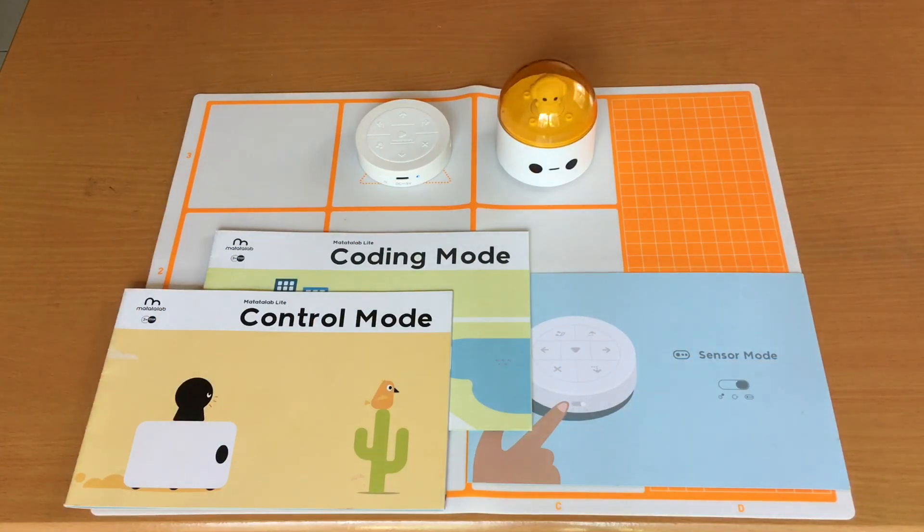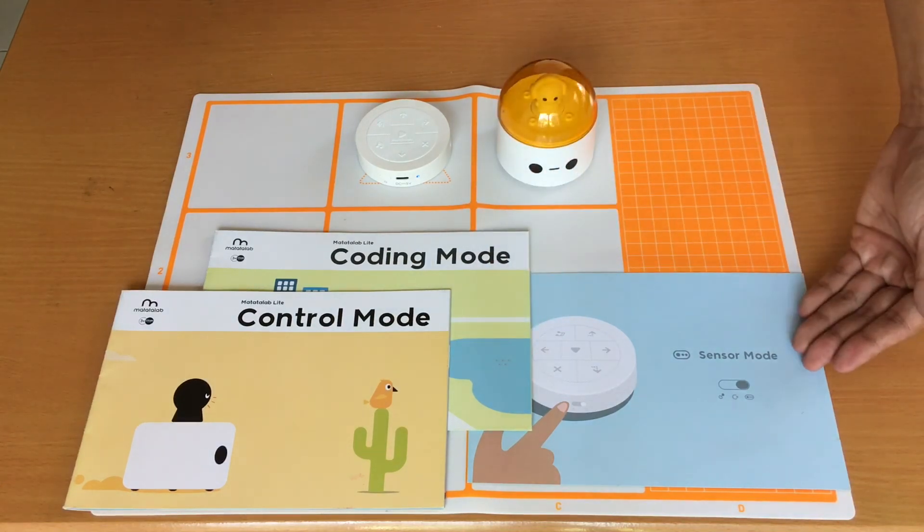That concludes my demo for the Matatabot Light. As a recap, this robot teaches kids the basic concept of programming and develops their computational thinking and problem-solving skills. It has three modes: the control mode, coding mode, and the sensor mode.